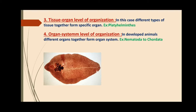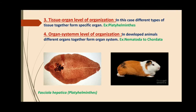All the members of Platyhelminthes belong to this criteria; Fasciola hepatica is a member of Platyhelminthes. Number four: organ-system level of organization — in developed animals, different organs together form an organ system. Example: Nematoda to Chordata. All animals from those phyla belong to this criteria, meaning those are developed animals. For example, Cavia porcellus from Chordata.